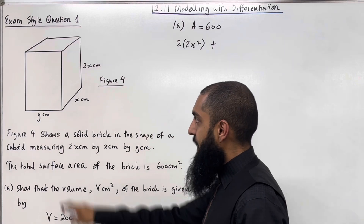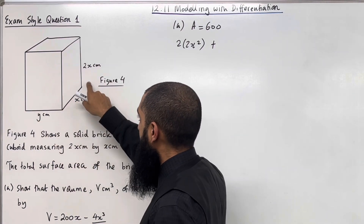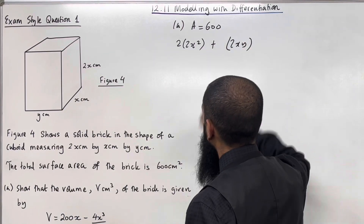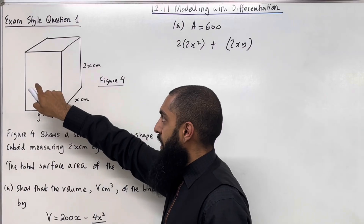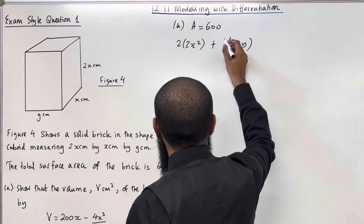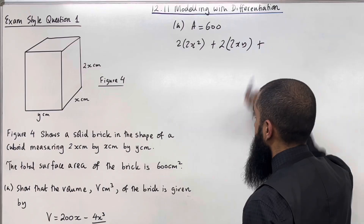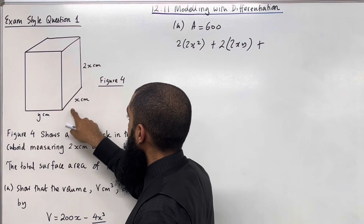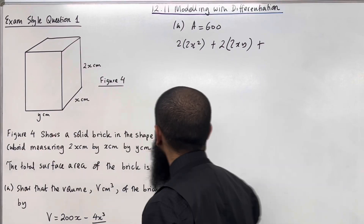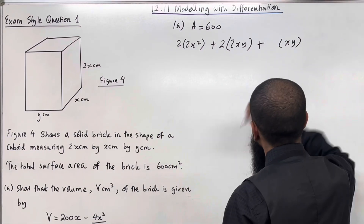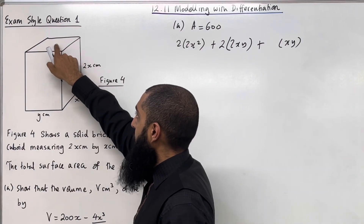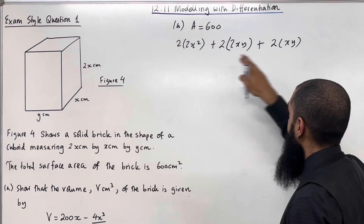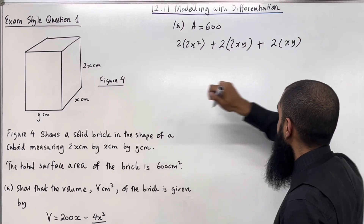The area of this face over here is y multiplied by 2x, so that will be 2xy. But we have two lots of this face — the front and the back. So two lots of 2xy, plus. The area of this face over here is x multiplied by y, so xy.